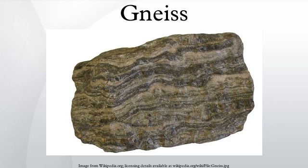Gneiss is a common and widely distributed type of rock formed by high-grade regional metamorphic processes from pre-existing formations that were originally either igneous or sedimentary rocks. It is often foliated, with foliations characterized by alternating darker and lighter colored bands, called gneissic banding.